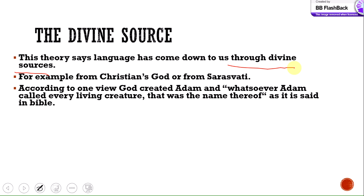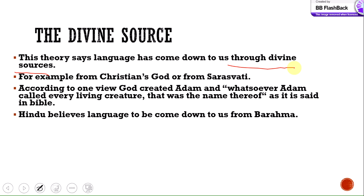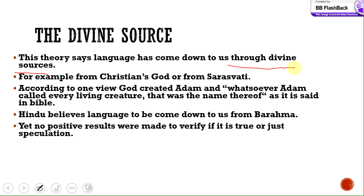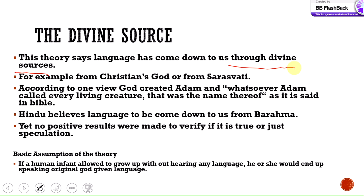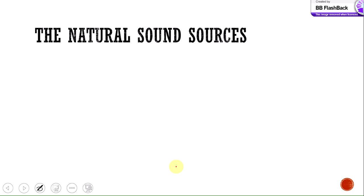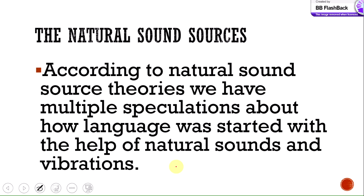Hindus believe language came down from Brahma, so the divine source differs across religions. No positive results were made to verify whether it is true or just speculation. The basic assumption is: if a human infant were allowed to grow up without hearing any language, they would end up speaking the original God-given language. But experiments showed this did not happen — they spoke different languages, not a divine original one.